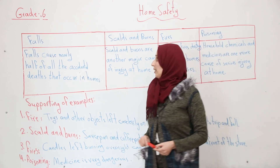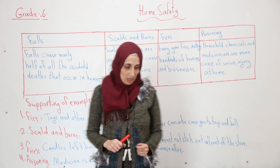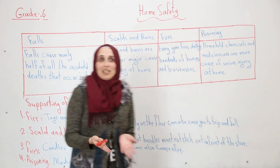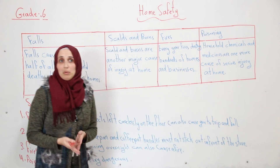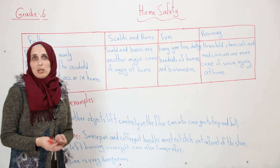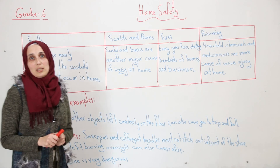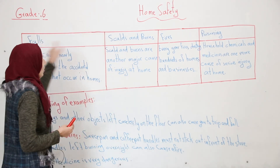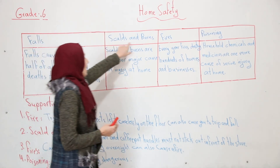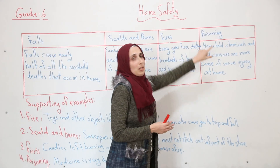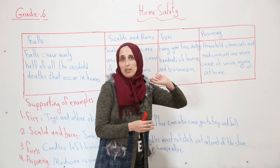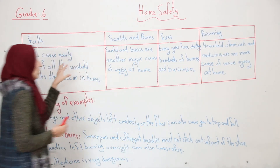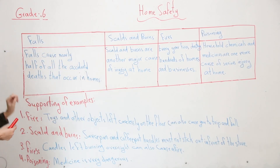Now we said what might cause accidents in our home. We said falls, scalds and burns, fires and poisoning. These are the causes of accidents in our home.